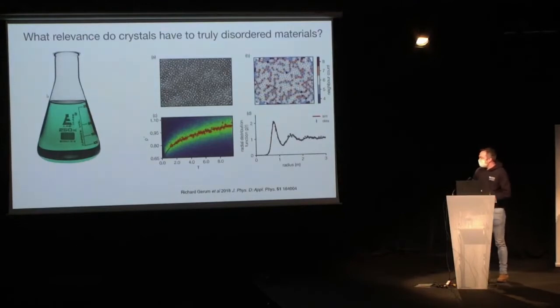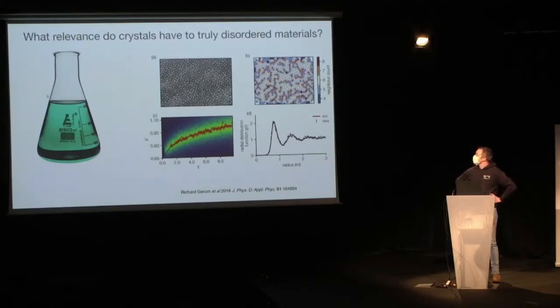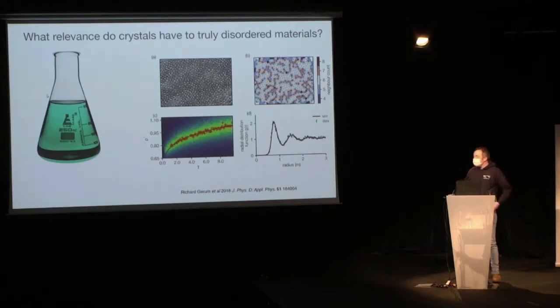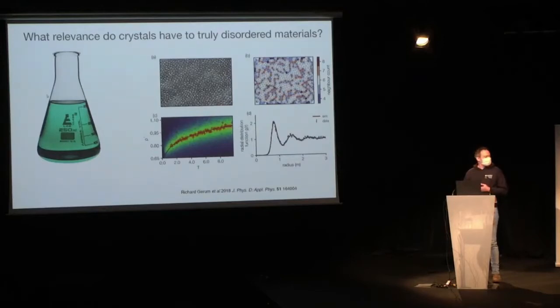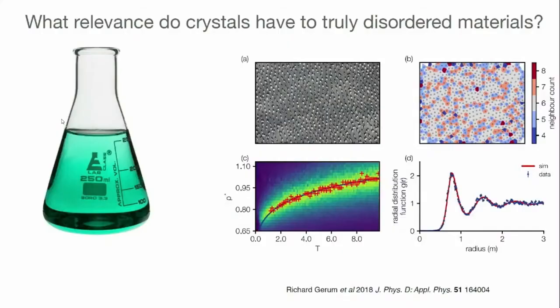This talk is about disordered materials — it's about liquids. The question is, what relevance does X-ray scattering have to truly disordered materials? Chemistry, of course, we do in the solution phase most often. It turns out that something like a liquid disordered material is not completely disordered; there is quite a lot of order left in there. We can look at that in real space and attempt to quantify it using something called a pair distribution function.